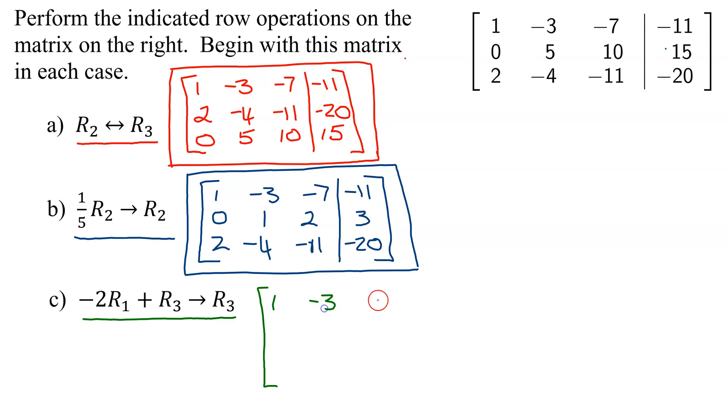So it's 1, negative 3, negative 7, and negative 11. Row 2 is 0, 5, 10, and 15.